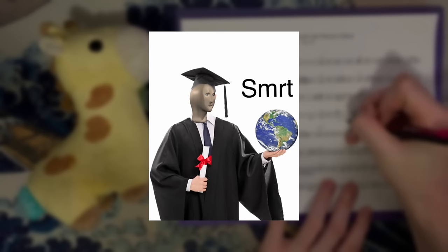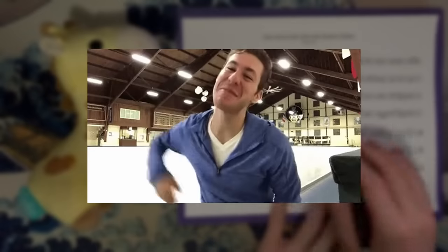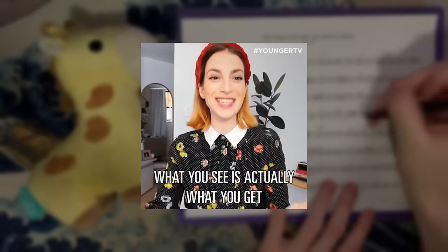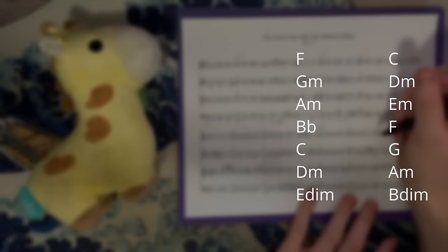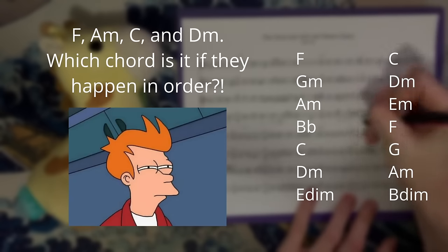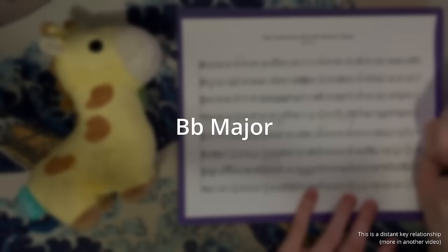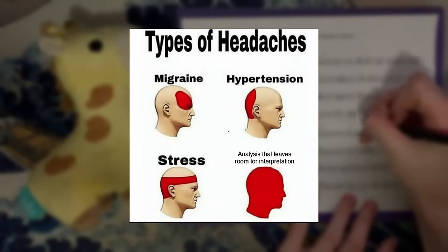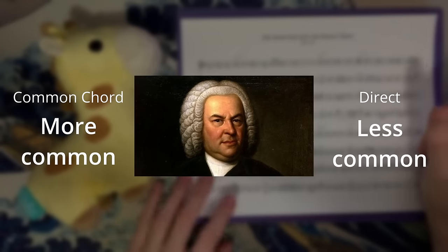A modulation is a shift of key. Bach modulates in virtually all of his chorales, doing so in two ways: using a common chord between two keys, or modulating directly. Common chord modulation is exactly what it sounds like — Bach moves from one key to another using a chord the two keys share. But when keys share multiple chords, it can be difficult to pinpoint exactly where the modulation takes place. In a direct modulation, there's no setup — one key moves to another whether between sections or between phrases.